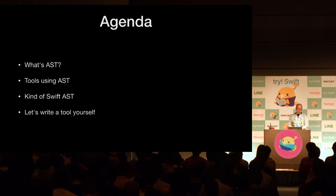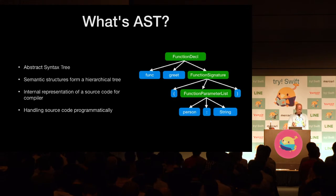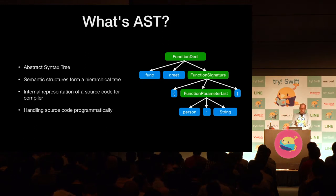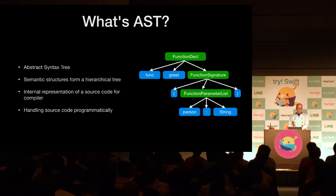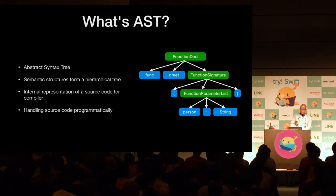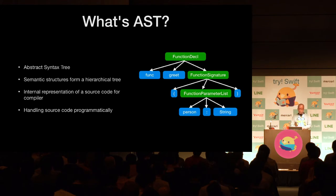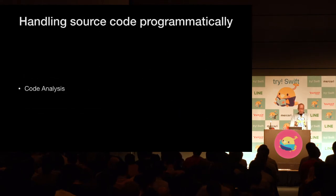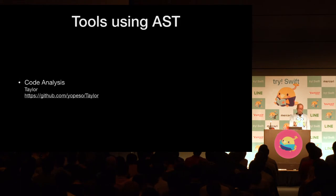Let's create a tool using AST to make Swift more convenient. AST stands for Abstract Syntax Tree — data structures used in compilers to represent the structure of program code. Xcode source editor also uses AST for code completion or refactoring. AST is generally a compiler's internal representation, but it is used in development tools since AST makes it possible to handle source code programmatically. Source code metrics analysis is a typical usage of AST. The tool called Taylor will analyze Swift AST and report the complexity of the source code.